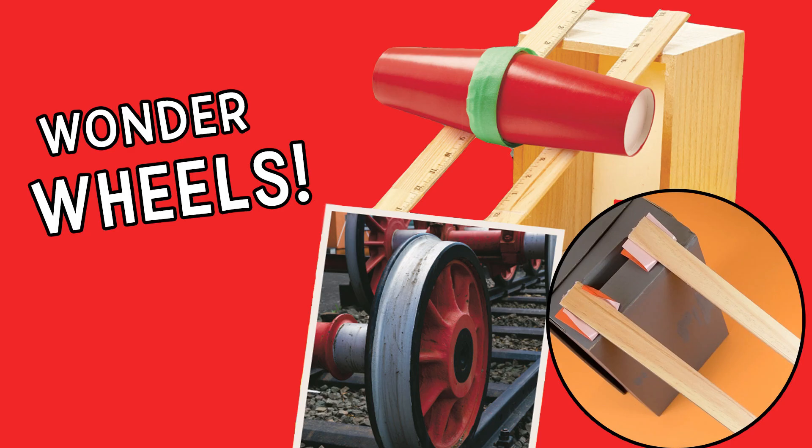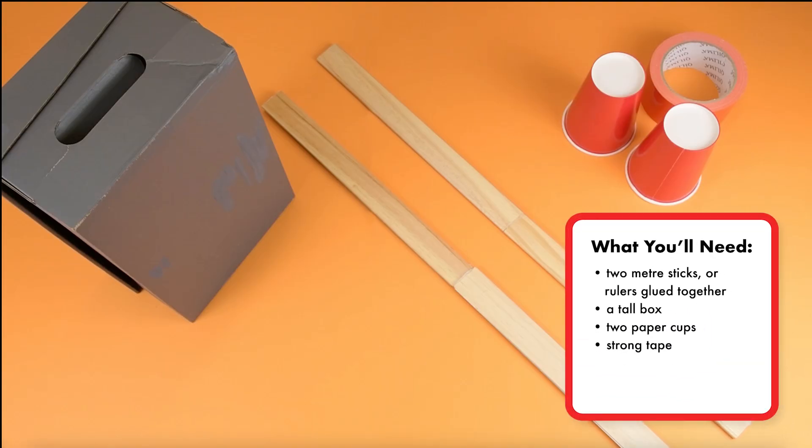Wonder Wheels! Learn how train wheels stay on the tracks with this experiment. You'll need two meter sticks or rulers glued together, a tall box, two paper cups, and strong tape.